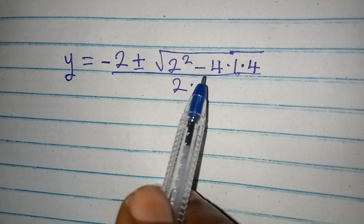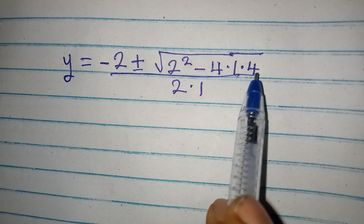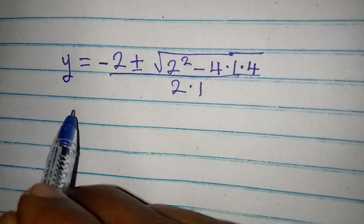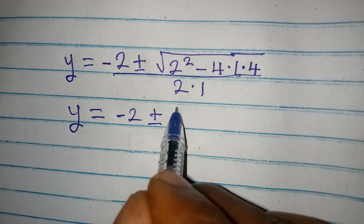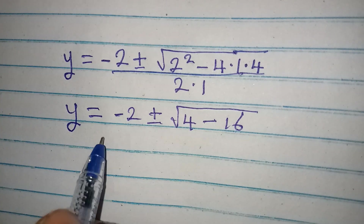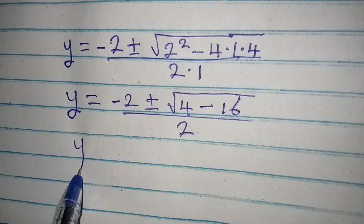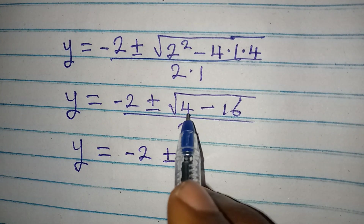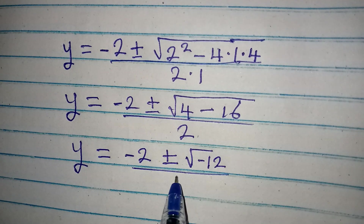Substituting: b = 2, so we have y = (-2 ± √(4 - 4×1×4)) / (2×1). That gives y = (-2 ± √(4 - 16)) / 2, so y = (-2 ± √(-12)) / 2.